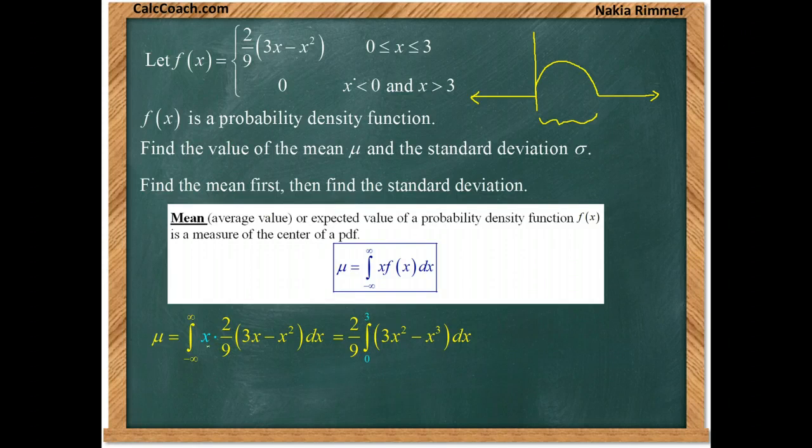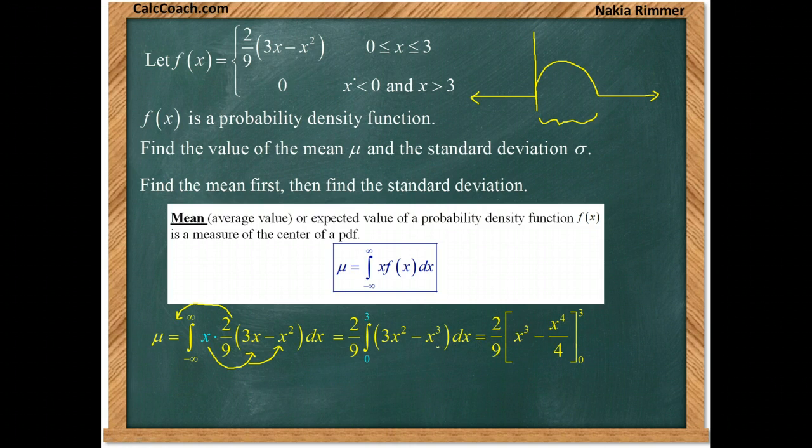When it comes time to put the x in we can distribute it in. And we can pull the 2 ninths out. Now this is a polynomial integral. We just find the anti-derivative using the power rule in reverse. X cubed over 3, the 3's cancel so we just get x cubed as the anti-derivative. And x fourth over 4 is the anti-derivative of the second term.